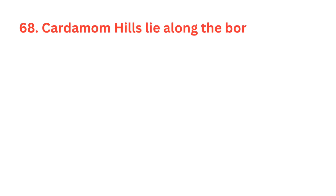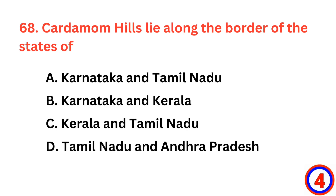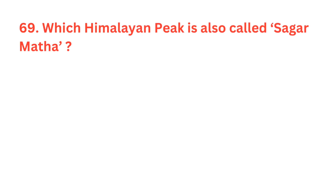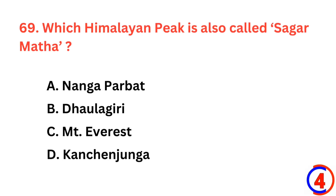Cardamom hills lie along the border of the states of? The correct answer is option C, Kerala and Tamil Nadu. Which Himalayan peak is also called Sagarmatha? The correct answer is option C, Mount Everest.